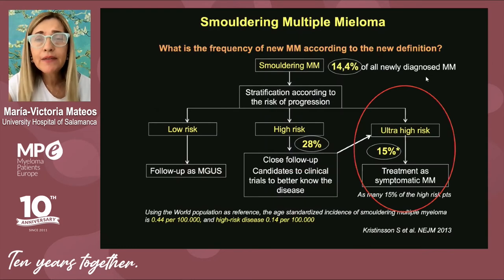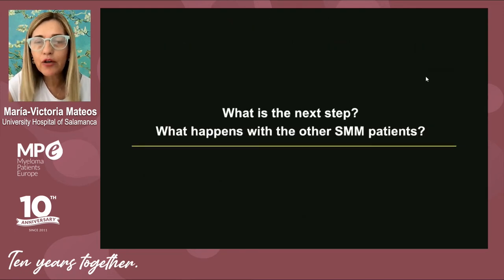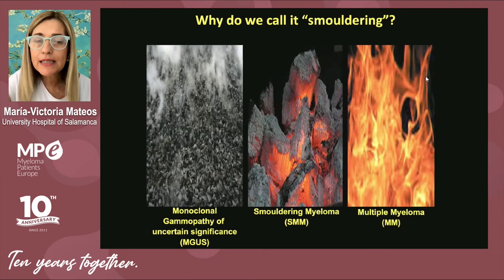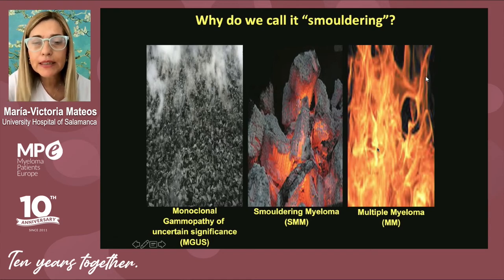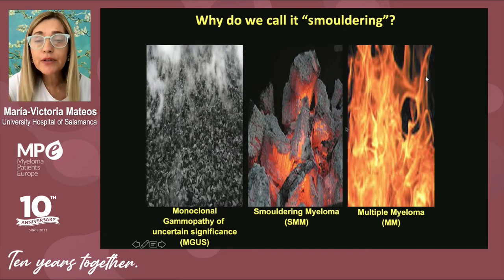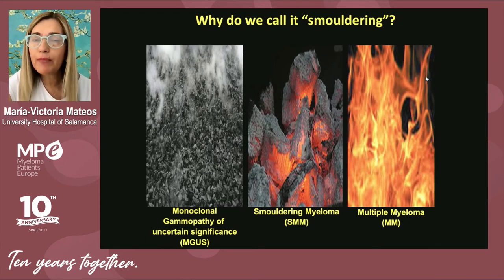This proportion of newly reclassified myeloma patients is rather small, and we must consider what happens with the remaining smoldering myeloma patients. Smoldering is a burning disease — some patients will never progress to the overt fire, comparable to low-risk smoldering myeloma; others will move rapidly to multiple myeloma; and in the middle we have intermediate-risk smoldering myeloma patients.